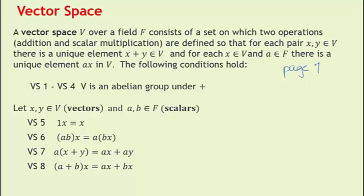Look at the properties about scalar multiplication. Property number 5 says that since F is a field we have 1, the multiplicative identity, and if you multiply that to a vector x, you get x. Property 6 gives a kind of associative property: x is coming from V and a and b are elements of the field F, so you can multiply ab and then do the scalar multiplication to vector x, or you could multiply b to the vector x and then a.